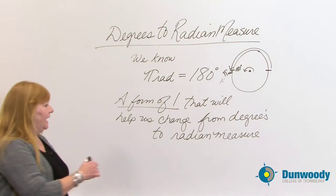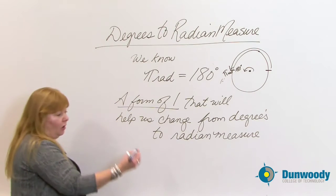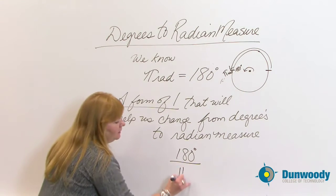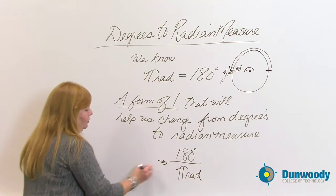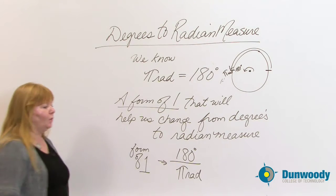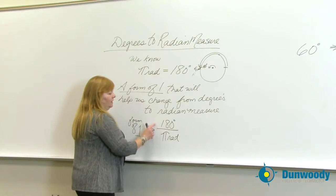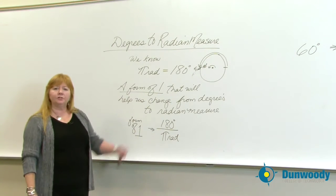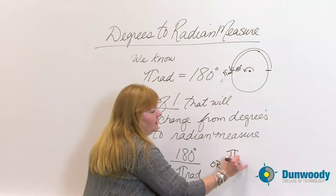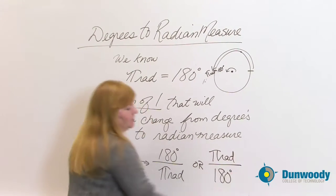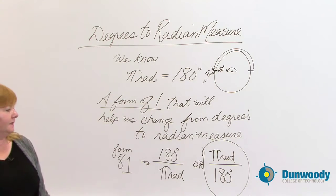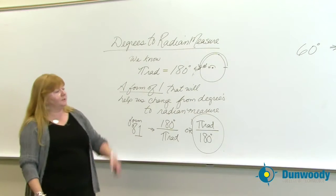Because this equals this, two different ways of saying the same thing, and because any number divided by itself is indeed a form of one, we get to use this unique form of one to help us get work done. In the last segment we used this form of one to convert into degree measure. But another way we can use this is to convert from 60 degrees in this example from degree measure back into radian measure.